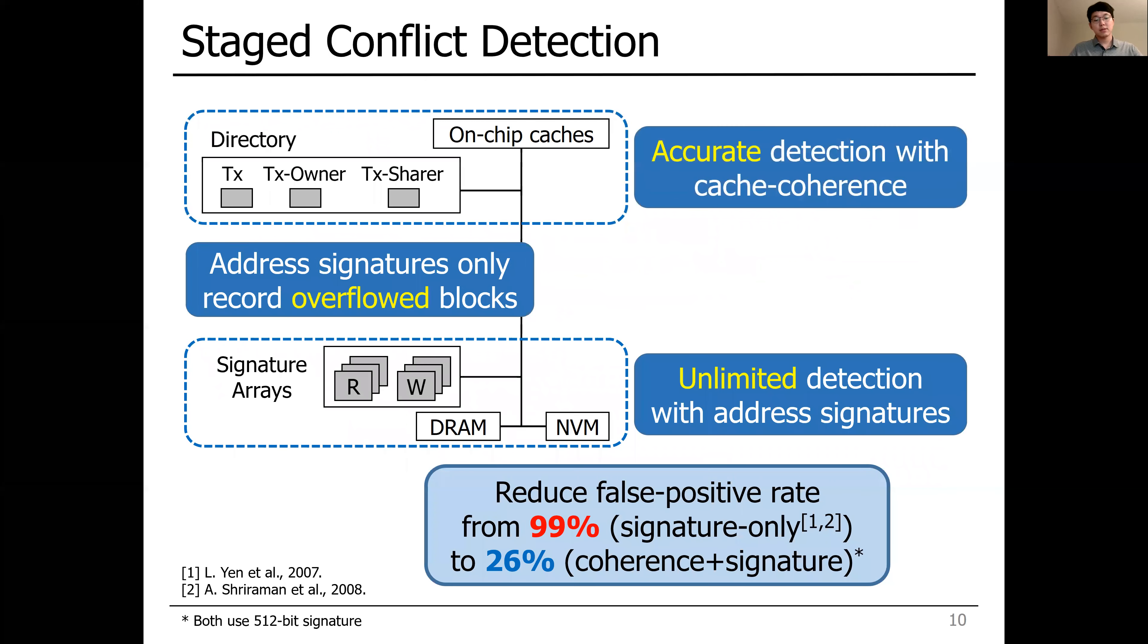By having different detection schemes, UHTM reduced the false-positive rate from 90% in the L1 signature-only system to 26%.